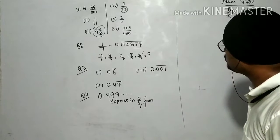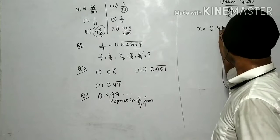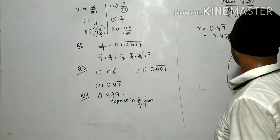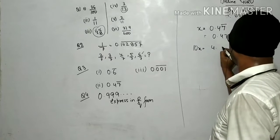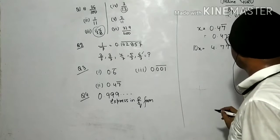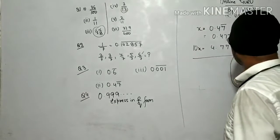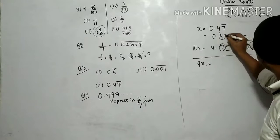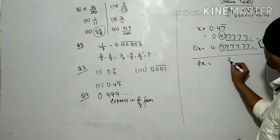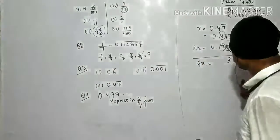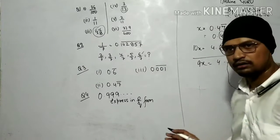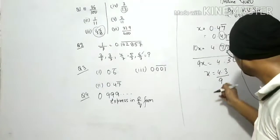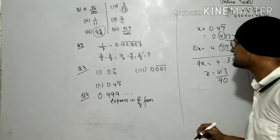Next, let x = 0.47̄ = 0.4777... Multiply by 10: 10x = 4.777... Now subtracting: 10x − x = 9x. The 7s cancel out. On the right side: 4.7 − 0.4 = 4.3. So 9x = 4.3. Removing the decimal: x = 43 upon 90. Note that trailing zeros after the decimal don't count, so the answer is 43 upon 90.